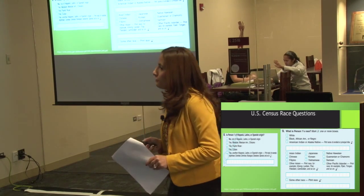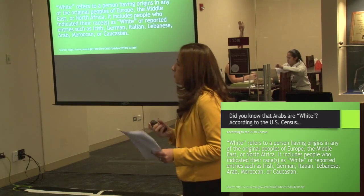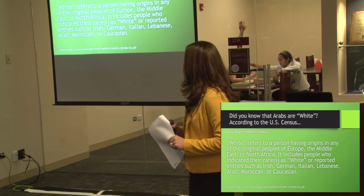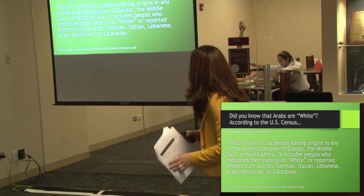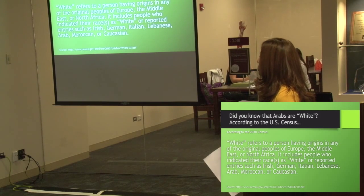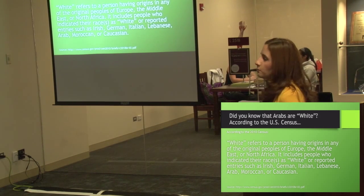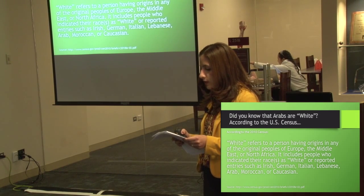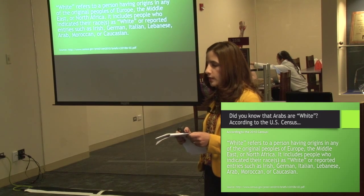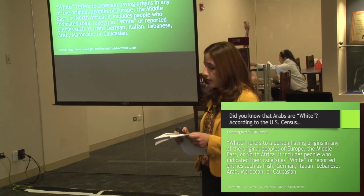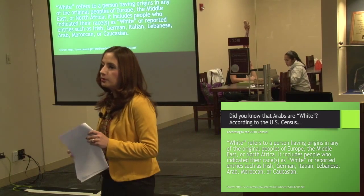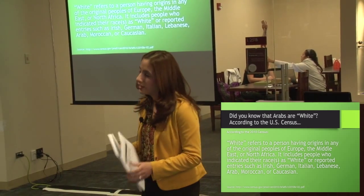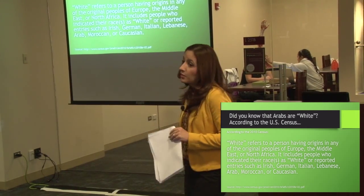Arab Americans are classified as white on the U.S. Census. Who else is considered white? The definition states: white refers to people having origins in any of the original peoples of Europe, the Middle East, or North Africa. It includes people who indicated their race as white or reported entries such as Irish, German, Italian, Lebanese, Arab, Moroccan, or Caucasian. As you can see, white can actually be very diverse and mean many different things.